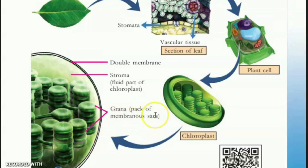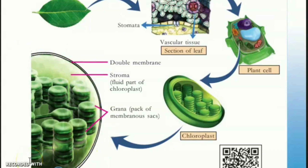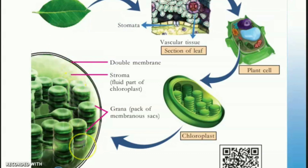This is a pack of membranous sacs — this is the chloroplast. This is a fluid called stroma. This chloroplast has a double membrane. These are the parts of the chloroplast.